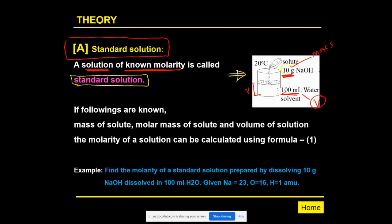We also need to know the molar mass of sodium hydroxide. Since we know the chemical formula, we can find its molar mass. Knowing the mass of solute, the molar mass, and the volume of solution, we can calculate the molarity using Equation 1.